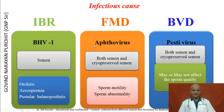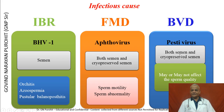Infectious diseases such as IBR have effects on semen and result in Orchitis, Azoospermia, and Pustular Balanoposthitis. Diseases like FMD affect both fresh and cryopreserved semen — they affect sperm motility and increase sperm abnormalities. BVD virus can result in problems in both fresh and cryopreserved semen, but may or may not affect sperm quality.